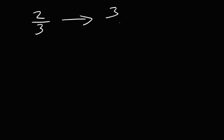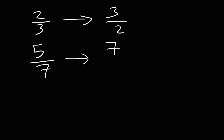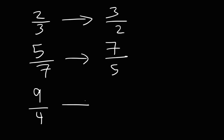Now, what is the reciprocal of 2 over 3? If you have a fraction, all you need to do is flip the fraction. The reciprocal is 3 over 2. The reciprocal of 5 over 7 is 7 over 5. The reciprocal of 9 over 4 is 4 over 9. Once again, all you need to do is flip the fraction.